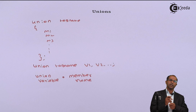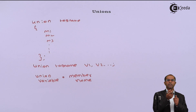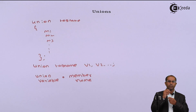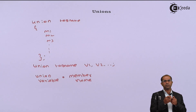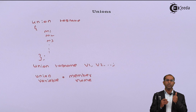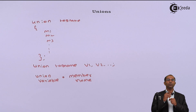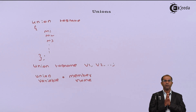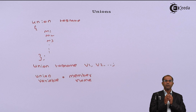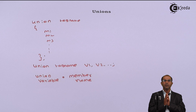You might feel that I'm just revising structures and replacing the word 'structure' with 'union' — that I'm not teaching anything new. That is not the case. There will be differences which exist between structures and unions, and that difference is with respect to memory. When a structure's size is to be identified, the size of a structure is always equal to the sum of the sizes required by its members.